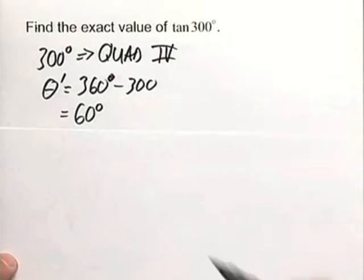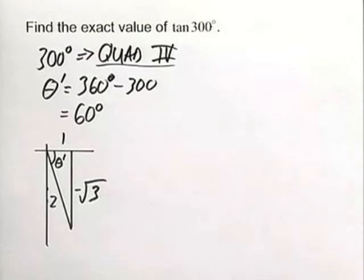Now what do we know about the tangent in the fourth quadrant? The tangent has to be negative. So I've drawn the triangle for you. You can see the theta prime in here being 60 degrees, and using this reference angle of 60 degrees we can find that tangent.